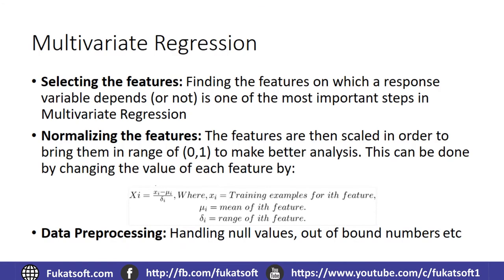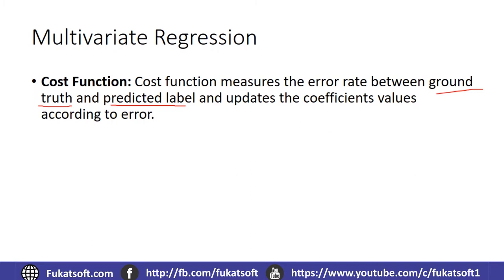So now we will see which steps we need to follow in order to perform a multivariate regression. The next thing is the cost function. The cost function basically measures the error rate between ground truth and the predicted label.